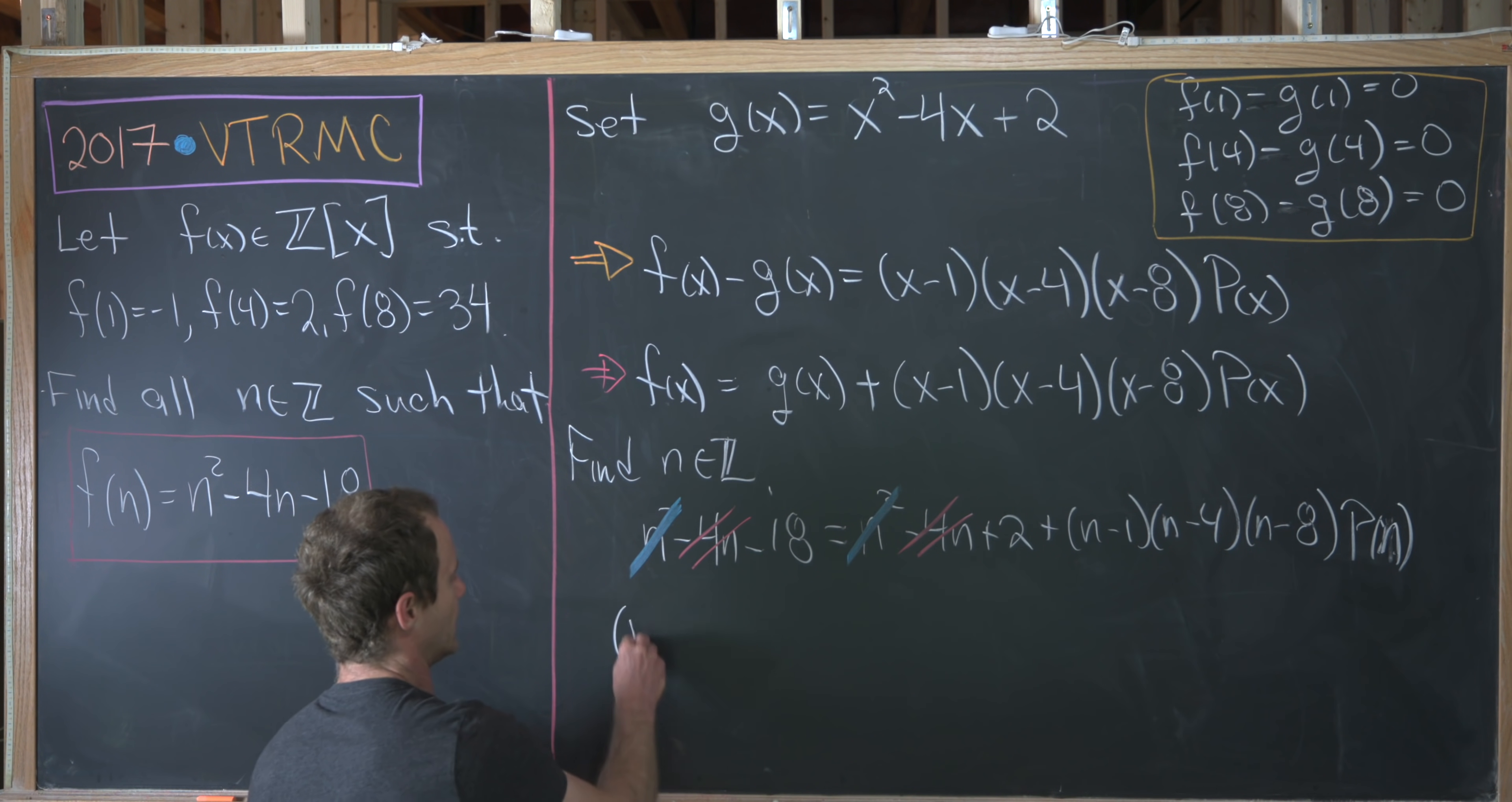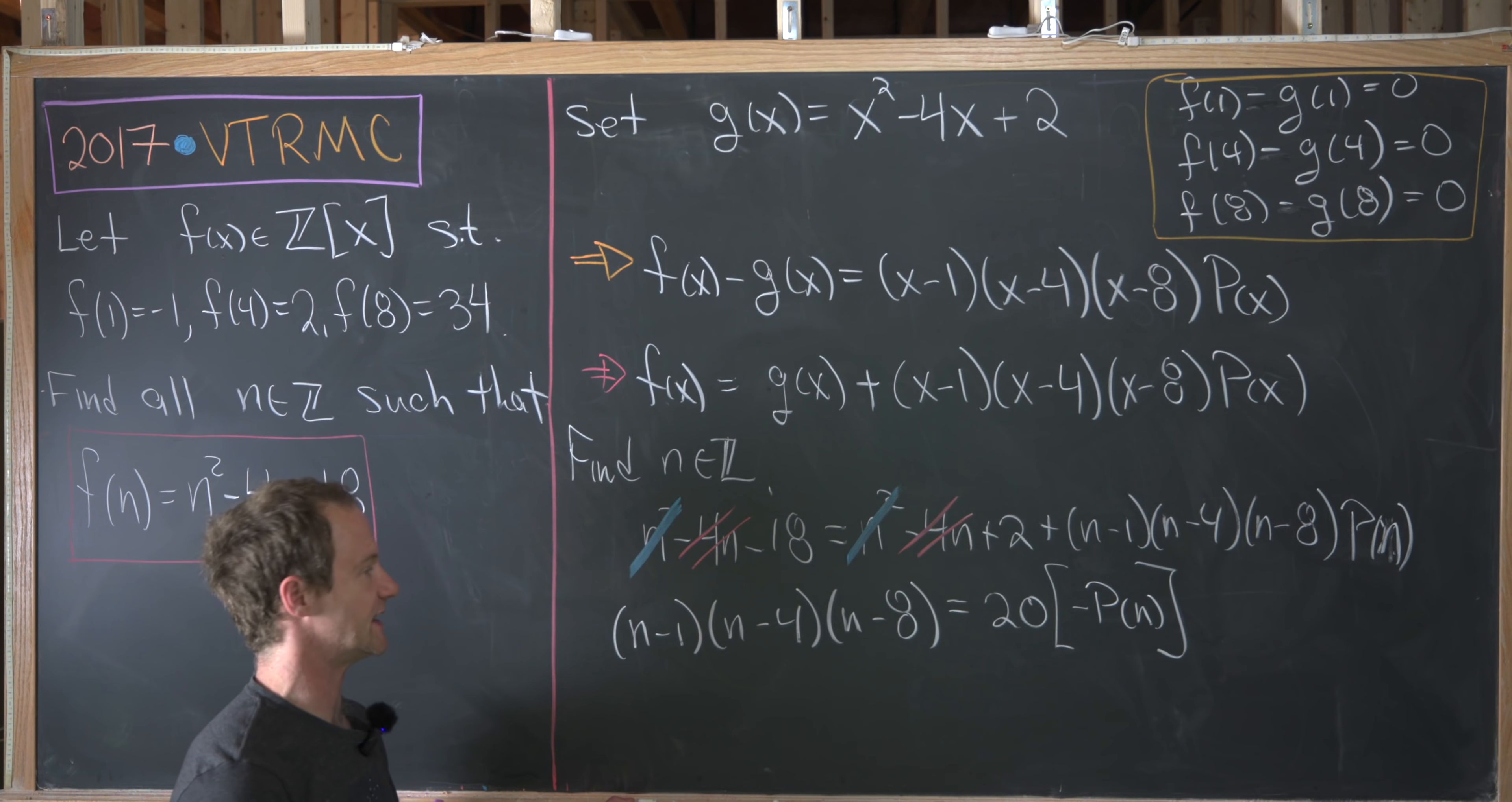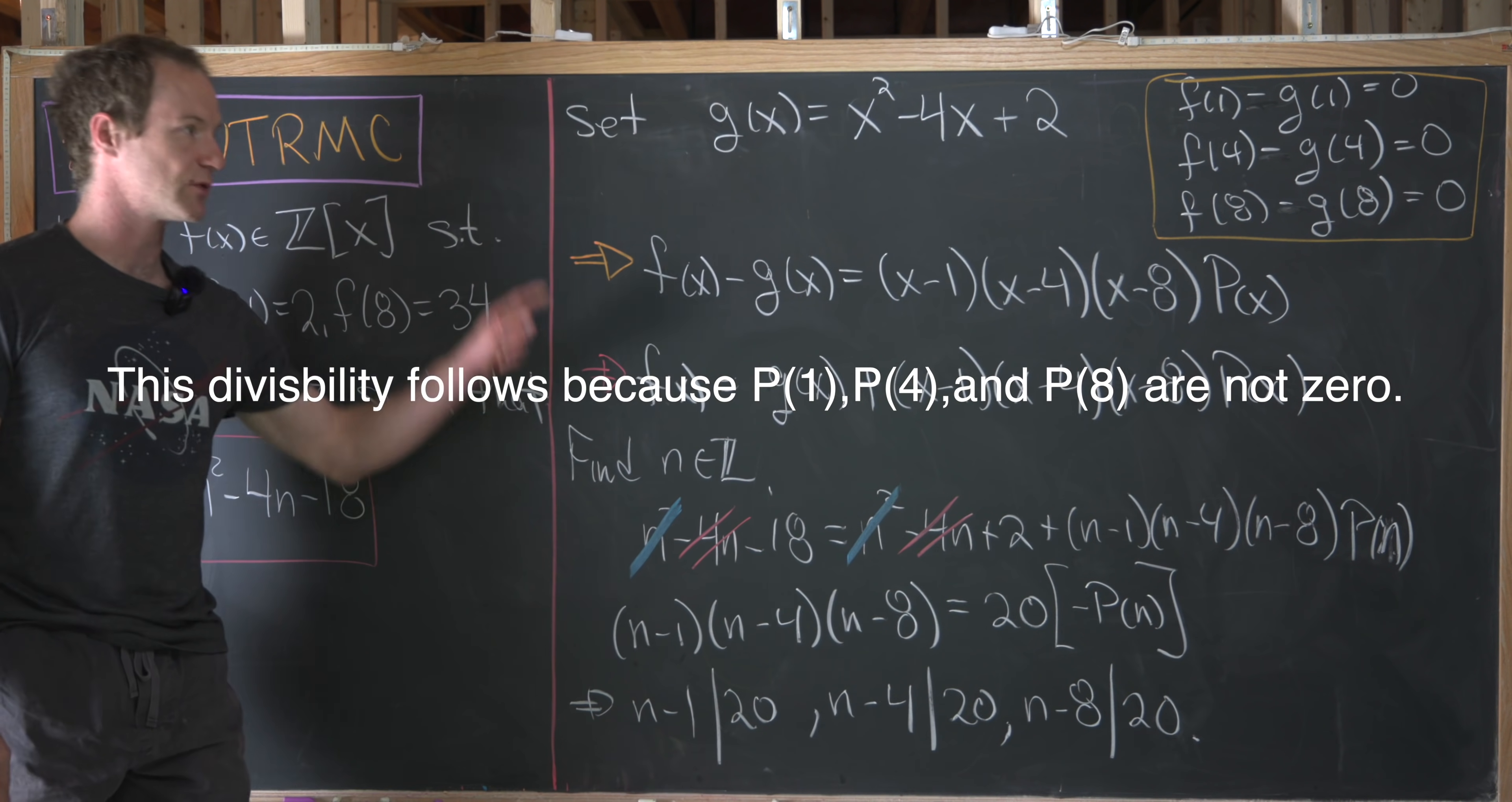So let's notice now that we can write (n minus 1) times (n minus 4) times (n minus 8) as 20 times a new polynomial, which is really just minus p of n. So I'm writing it like that just because it's a little cleaner. So notice that tells us that n minus 1 divides 20, just sort of by the definition of divisibility. n minus 4 and n minus 8 also divide 20. So let's write that down. We have n minus 1 divides 20, n minus 4 divides 20, and then finally, n minus 8 also divides 20. Let's bring that condition up and we'll finish it off.